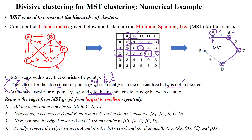There are still unvisited vertices. From D, we select the minimum distance. C is already in the MST and A is also already in the MST. The next option is 3 — the edge D to E, which is not yet visited. We establish that edge and add E into the minimum spanning tree. Now all vertices are connected, so we stop the algorithm.